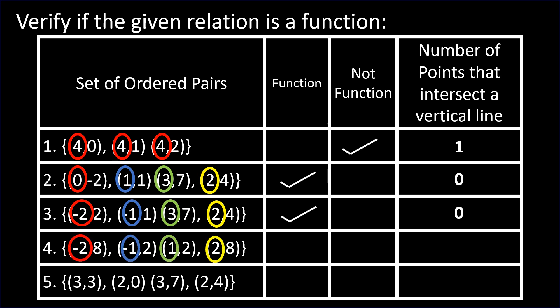For number 4, we have -2, -1, 1, and 2 as abscissas — the same case as numbers 2 and 3. Therefore, it is a function. For number 5, we have 2, 3, and 2 as abscissas. The number of points that intersect a vertical line is 2. Therefore, it is not a function.